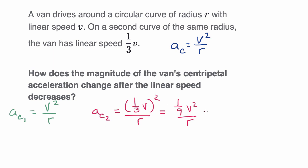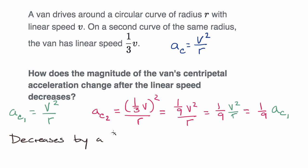I could write this as 1/9 times v squared over r. And v squared over r is the exact same thing as the centripetal acceleration from the first curve. So this is equal to 1/9 times the magnitude of our centripetal acceleration around the first curve. How does the magnitude of the van's centripetal acceleration change after the linear speed decreases? Around the second curve, we have 1/9 the magnitude of centripetal acceleration — it decreases by a factor of 9.